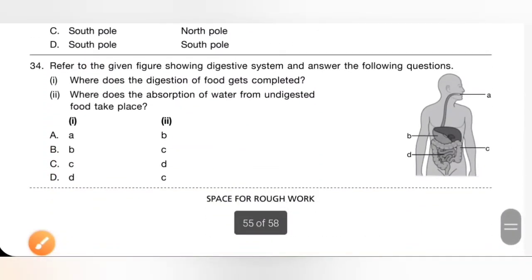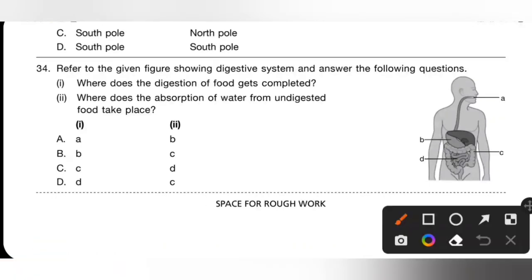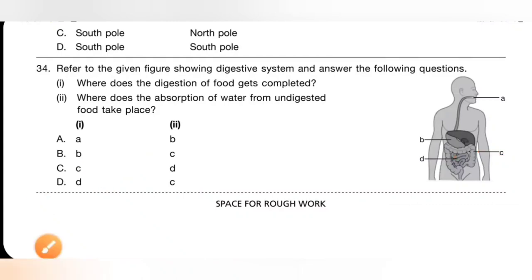Question 34: Refer to the given figure showing the digestive system. Where does digestion of food get completed? Digestion is completed in the small intestine, that is D. Where does absorption of water from undigested food take place? That occurs in the large intestine, that is C. Option D is the correct answer.